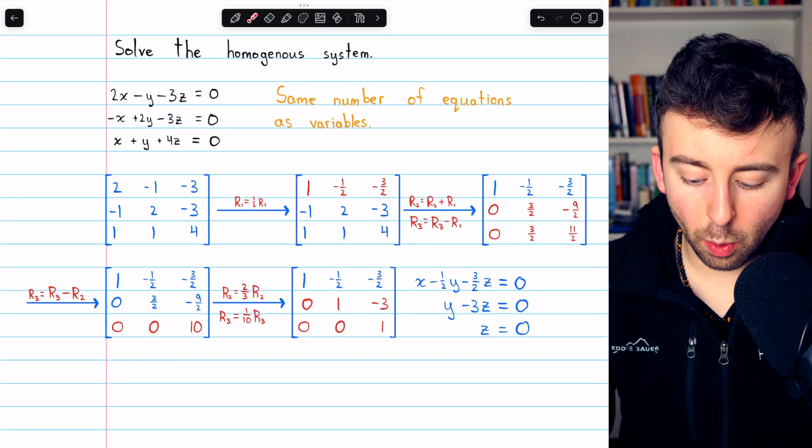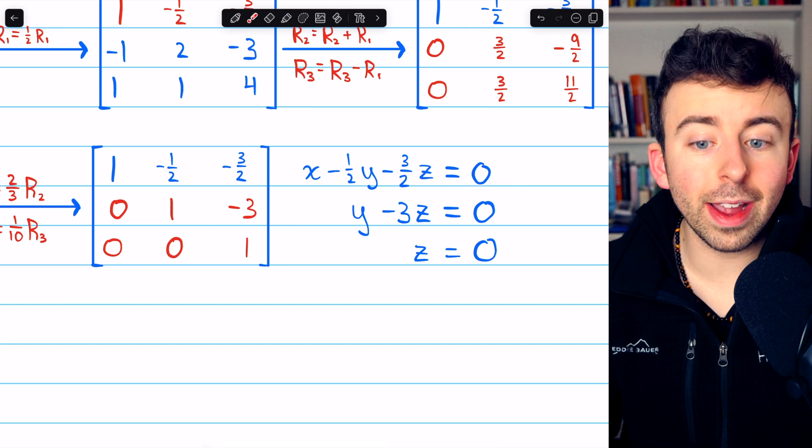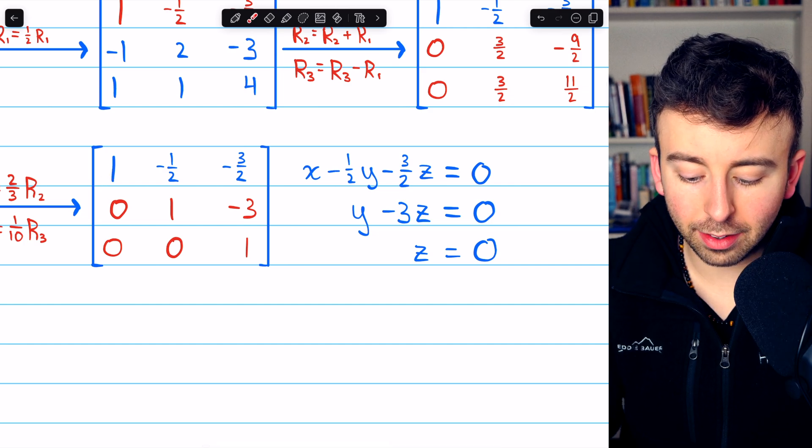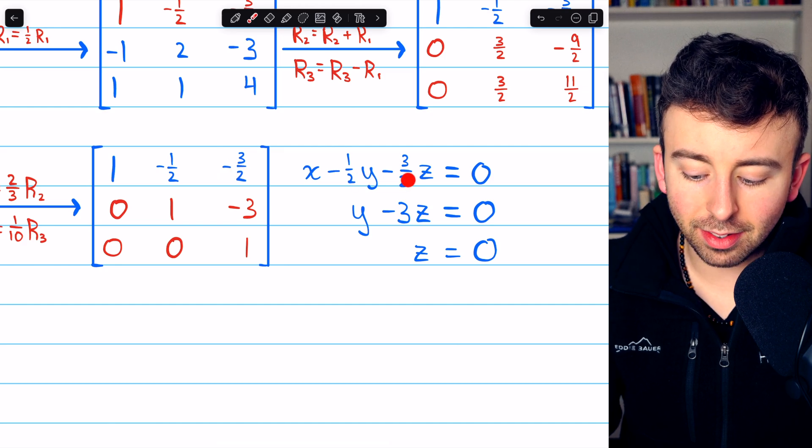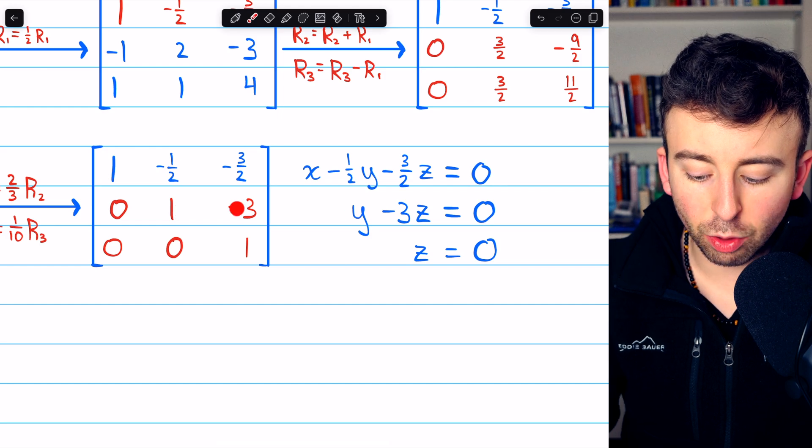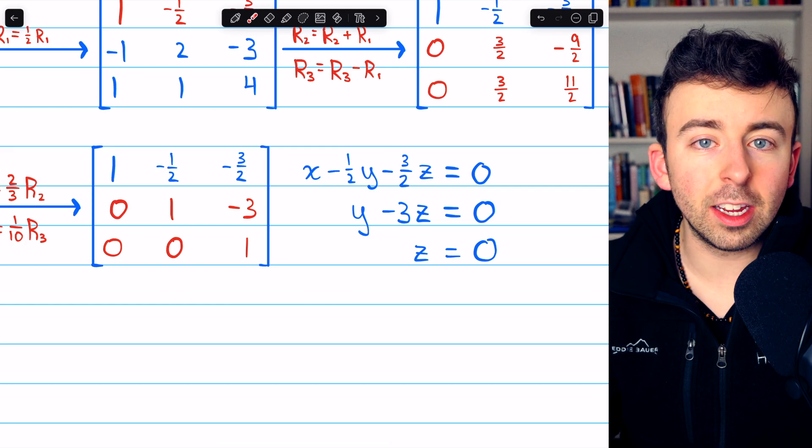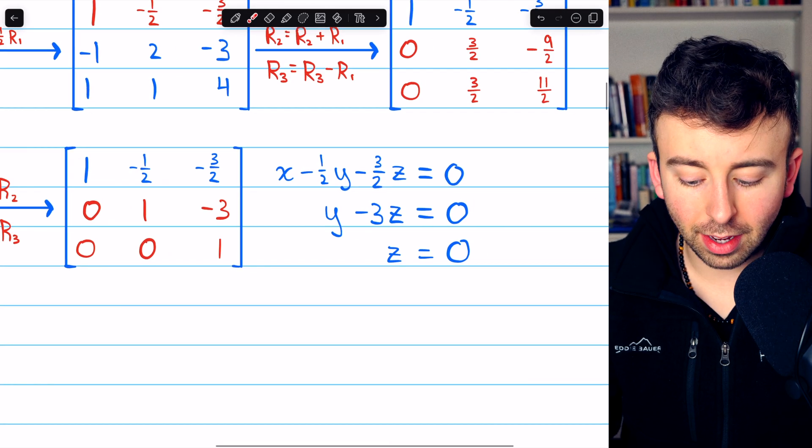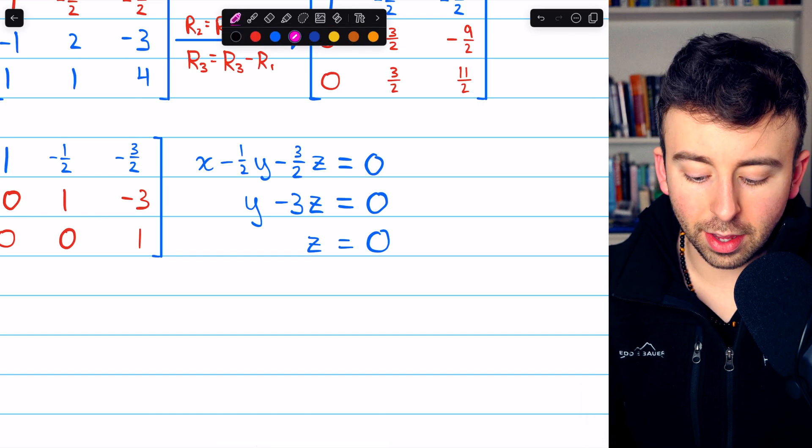At this point, we can use the row echelon form matrix to represent the system of equations. We have that 1x minus one half y minus three halves z equals zero. We have that 1y minus 3z equals zero. And we have that 1z equals zero.